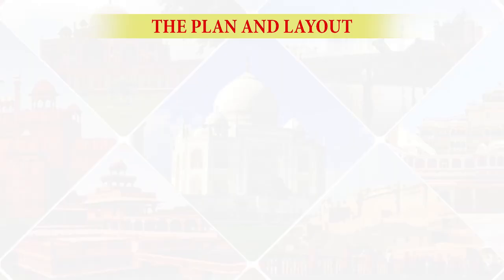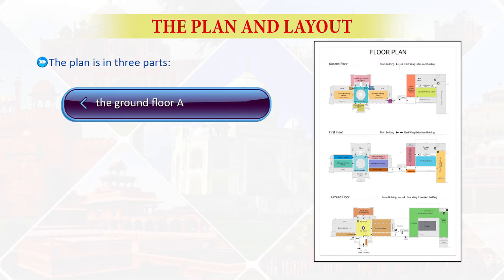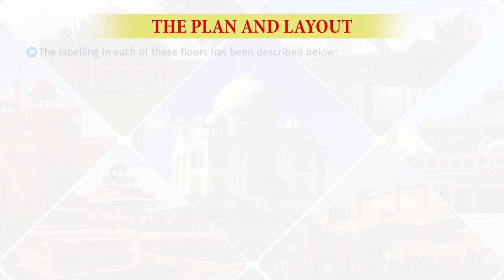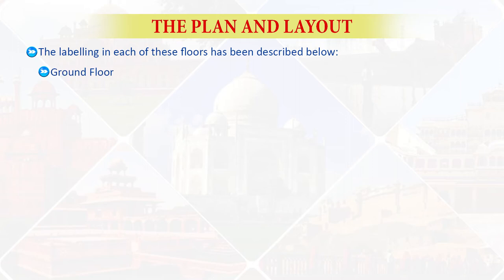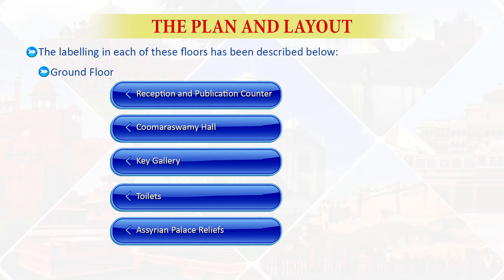Let's move forward and discuss the plan and layout. The plan of the museum is quite simple. There is a central hall from which staircases take you to the first and then the second floor. The galleries containing exhibits run on both sides of the central approach. The plan is in three parts: the ground floor (A), the first floor (B), and the second floor (C).